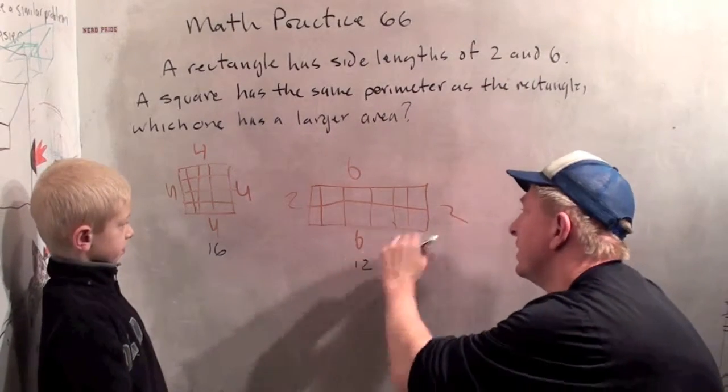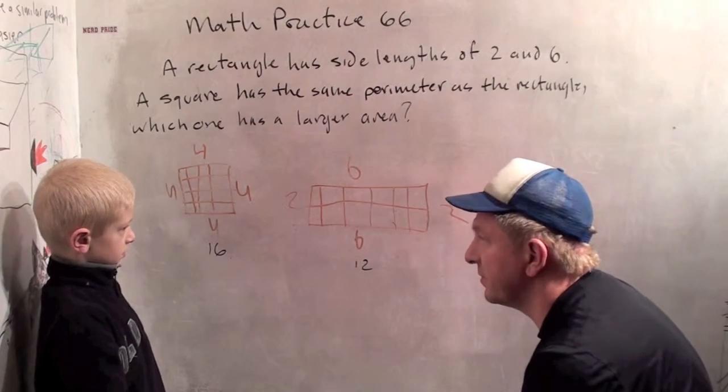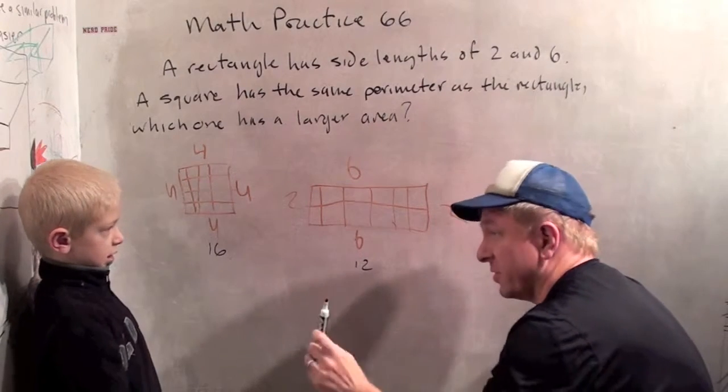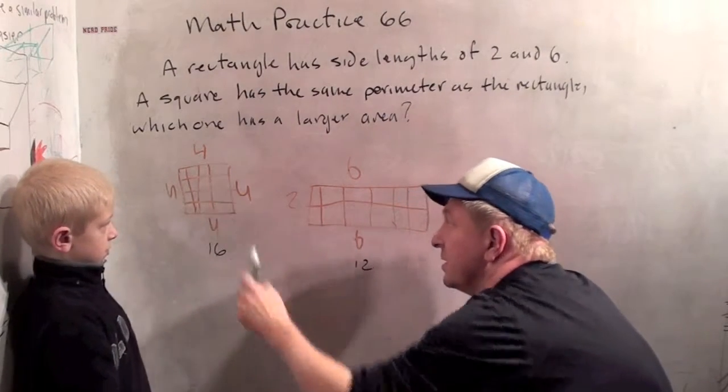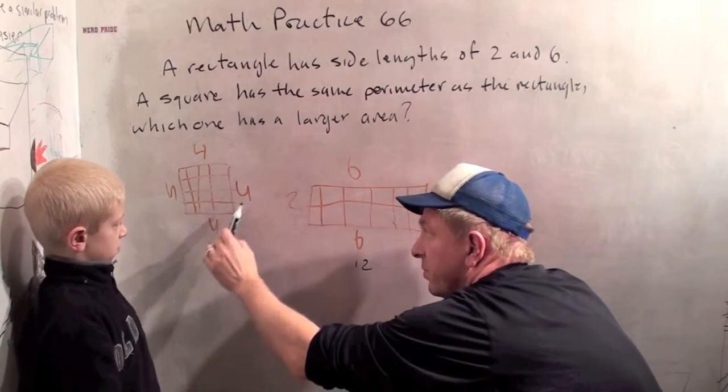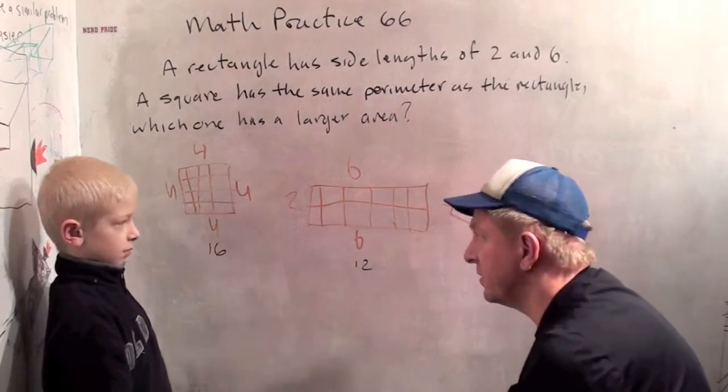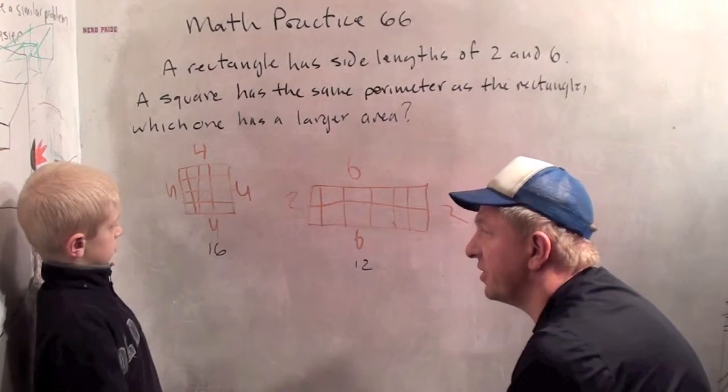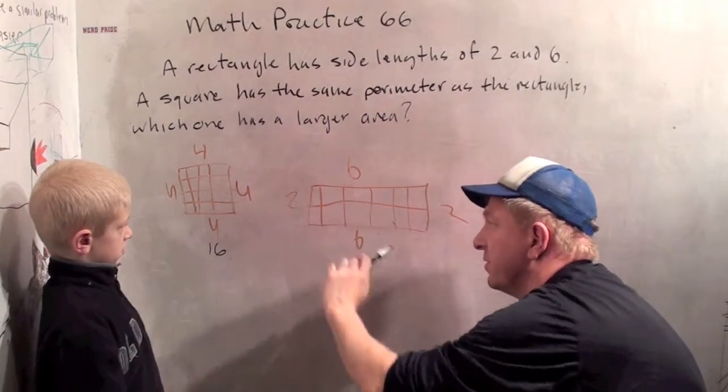So we drew a picture of our rectangle with sides of 6 and 2. And then we said, hey, that means the perimeter is 16. Now we have to draw a square whose perimeter is 16. And that means each one of the sides has to be 4, because 4 plus 4 plus 4 plus 4 is 16.